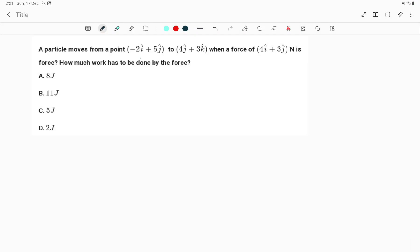A particle moves from a point (-2i + 5j) to (4j + 3k) when a force of (4i + 3j) newtons is applied.